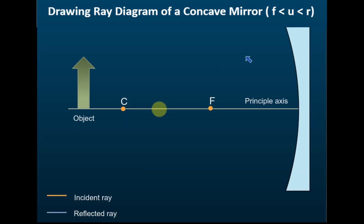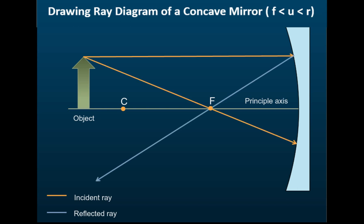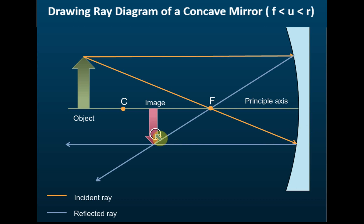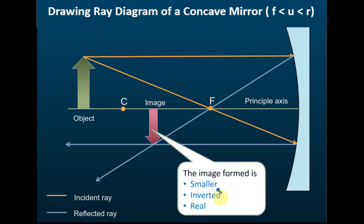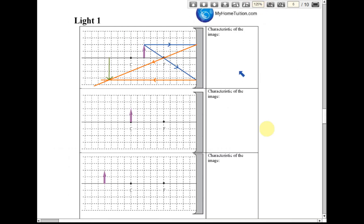When the object is placed further than c, using the same two rules, the rays converge and the image forms closer to the mirror. The image is smaller than the object, inverted, and in front of the mirror, so it is real. The characteristics are: smaller (diminished), inverted, and real. The characteristics of the image differ depending on where the object is placed.